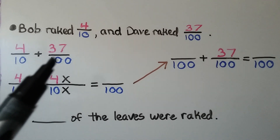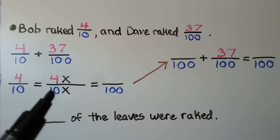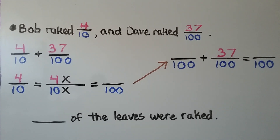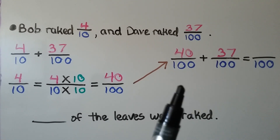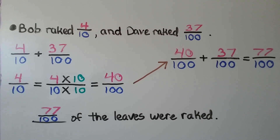To give them a common denominator of 100, we need to write 4 tenths as an equivalent fraction so that 100 is its denominator. 10 times 10 equals 100, so we multiply the numerator 4 by 10 also. That gives us 40 hundredths. Now that they have a common denominator of 100, we can add the numerators. 40 plus 37 is equal to 77, that's 77 hundredths. So 77 hundredths of the leaves were raked.